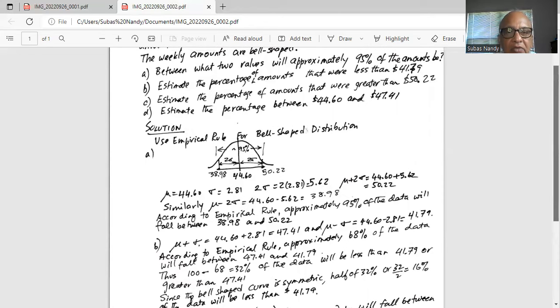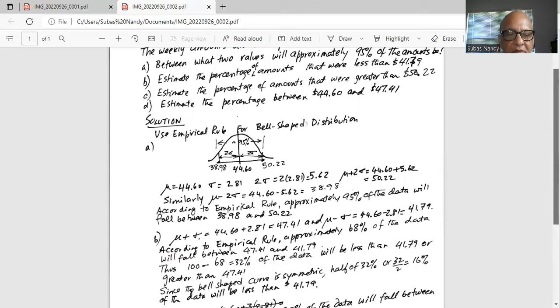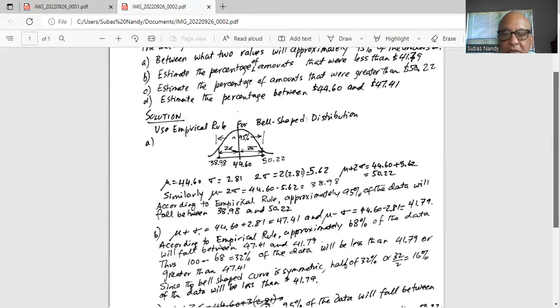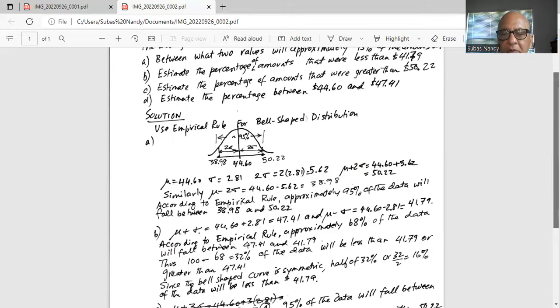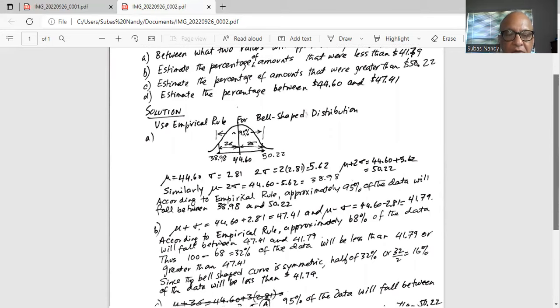Part b, estimate the percentage of amounts that were less than $41.79. Now, mu plus sigma is 44.60 plus 2.81 is 47.41 and mu minus sigma is 44.60 minus 2.81 is 41.79.